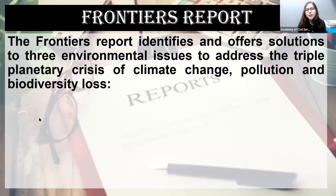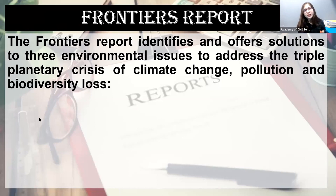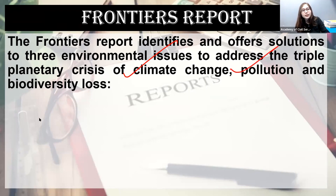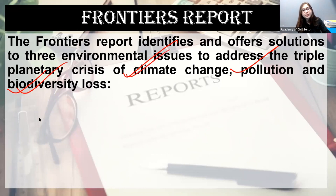The Frontiers Report, published by UNEP — the United Nation Environment Program — addresses three major issues: climate change, pollution, and loss of biodiversity. These three issues are interconnected, each causing and being caused by the others.